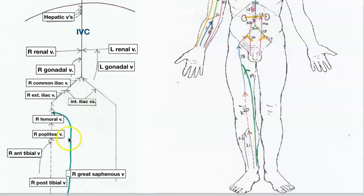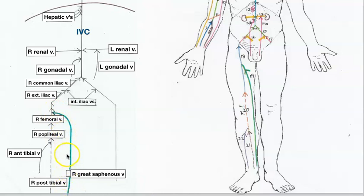The common iliac then takes blood to the inferior vena cava. The right and left sides are exactly the same. In venous circulation, we also have superficial veins, just like in the upper extremity. The great saphenous vein runs from the medial aspect of the foot all the way up, draining into the femoral vein on both sides, collecting from superficial tissues.